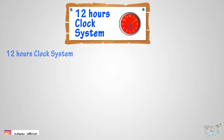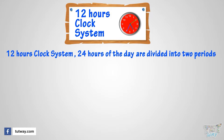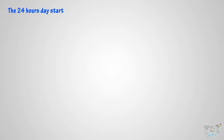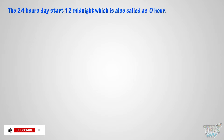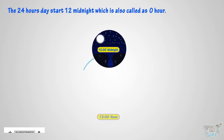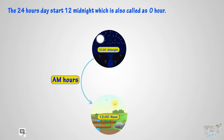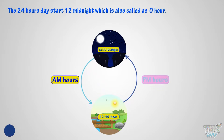In the 12-hour clock, the 24 hours of the day are divided into two periods. Each period consists of 12 hours. The 24-hour day starts at 12 midnight, which is called zero hour. The hours from 12 midnight to 12 noon are called a.m. hours, and the hours from 12 noon to 12 midnight are called p.m. hours.